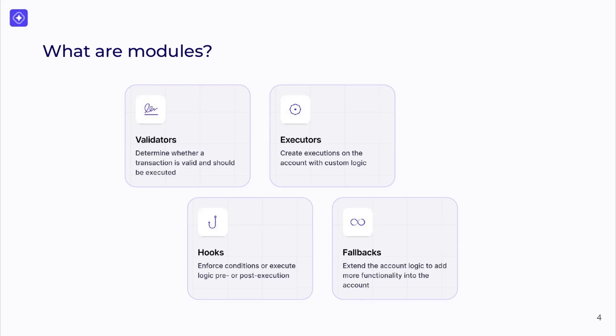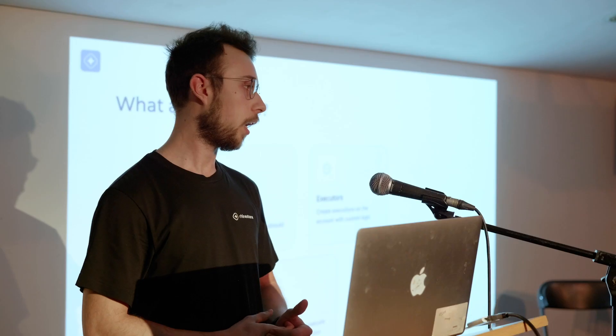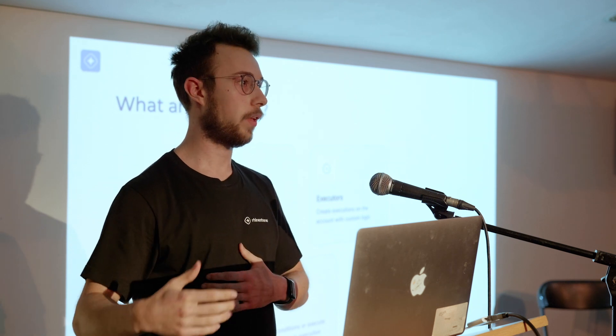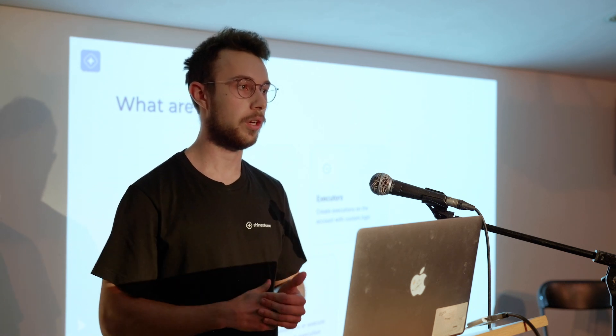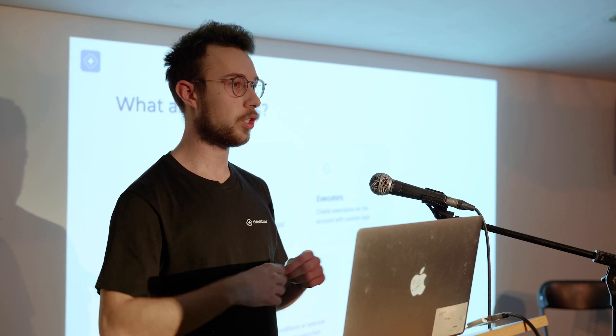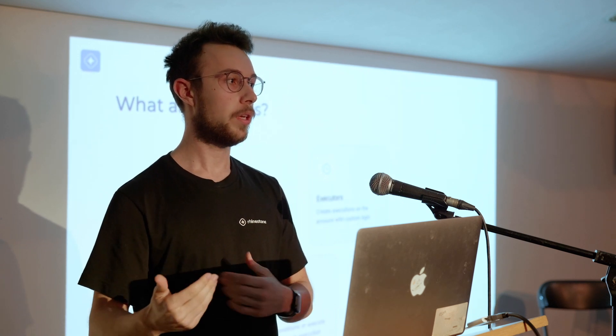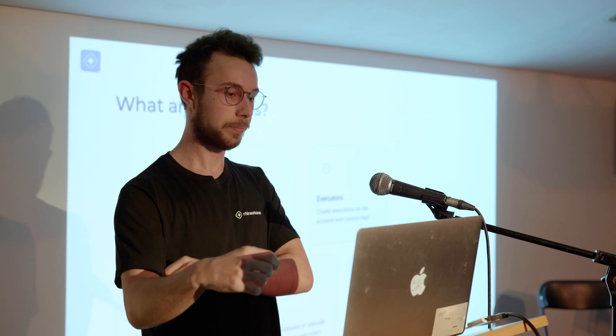The second module type is executors. Those modify the execution behavior of accounts. One easy example is automations — you can have an account do something like a swap, wait for the return value of that swap, and then do something else based on that.